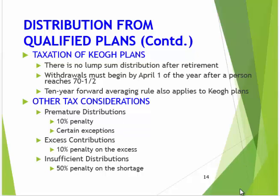Premature means prior to 59 and a half. What happens if you put too much money into the account? There's a 10% penalty on that excess. We already talked about the insufficient distribution piece.